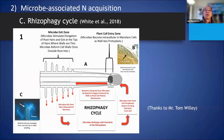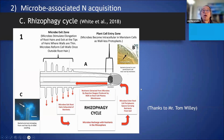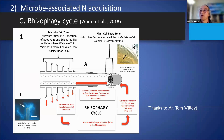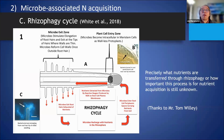Another interesting phenomenon is called the rhizophagy cycle. Plants absorb bacteria, extract nutrients from them, and then release the spent microbes back into the soil. The microbes recharge and return to the plant roots — a cycling process that has been observed microscopically. However, precisely what nutrients are transferred through the rhizophagy cycle, and how important this process is for overall nutrient acquisition, is still unknown.